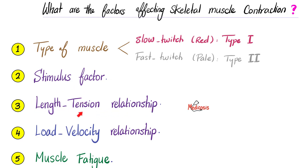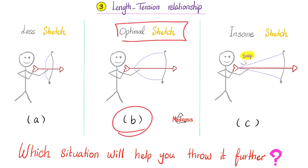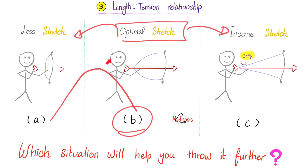Now let's talk about the length-tension relationship. Which position helps you throw an arrow further? Position A with almost no stretch, position B with optimal stretch, or position C with insane stretch to the point of nearly breaking the bow? The answer is B — optimal stretch. Below optimal, not good; above optimal, not good. The curve goes up within limits and then comes back down. B is optimal stretch; C is beyond the tipping point — the law of diminishing marginal return.